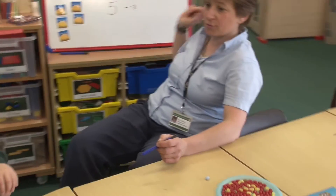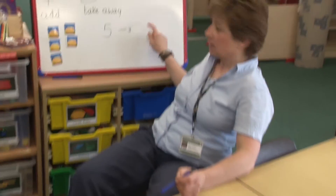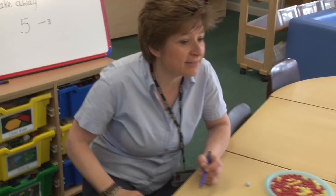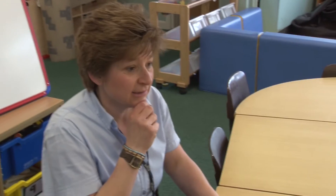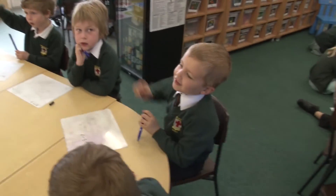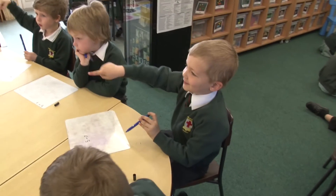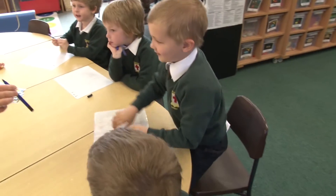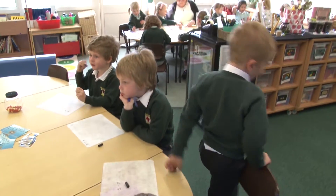Now five — we've got our calculation. Five take away three. Who can remember the symbol we need there before we put the answer? Christopher, can you remember? Equals, isn't it? Equals. Well done.